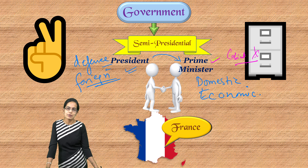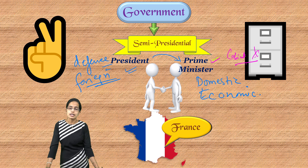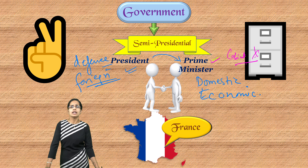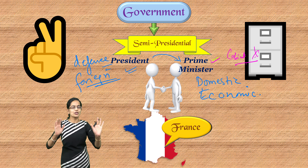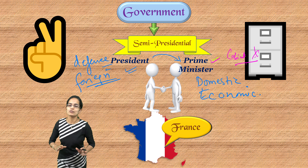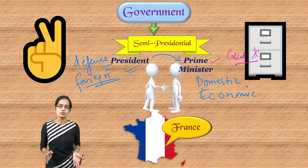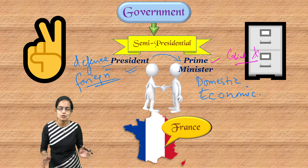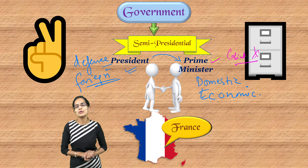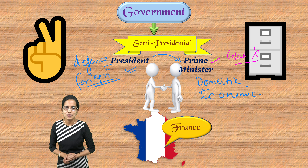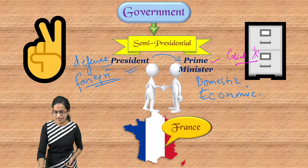Good examples of the semi-presidential form of government are France, Portugal, and Peru. This has been a brief introduction to the three different forms of government. We will be covering many more interesting lectures. Stay tuned and have a wonderful day ahead.